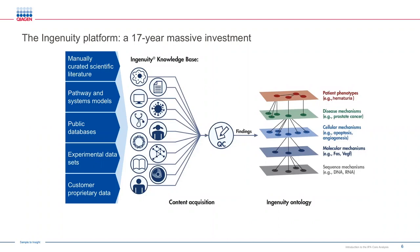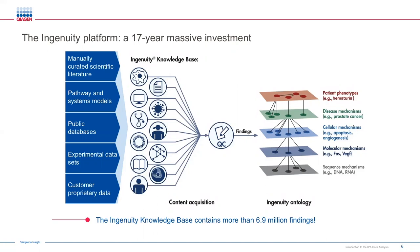We have strict quality control procedures to ensure that the findings underlying the knowledge base are accurate and timely. In addition to providing that content, we've structured it into something called the Ingenuity Ontology. This combination of our knowledge base and software algorithms enables you to quickly analyze and accurately interpret the biological meanings of your omics data. As of the end of September, the Ingenuity Knowledge Base contains greater than 6.9 million findings, and this number increases every week.